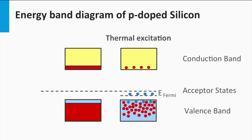P-doping of silicon can be illustrated by an electronic band diagram as well. The boron atoms result in acceptor states. These acceptor states have an energy level within the forbidden band gap of the silicon matrix and the acceptor states can be occupied by electrons. The energy level of the acceptor states is closer to the valence band than to the conduction band. This means that it requires much less energy for an electron to jump from the valence band to the acceptor state than to the conduction band. For silicon at room temperature, many electrons of the valence band can be excited to the acceptor states.